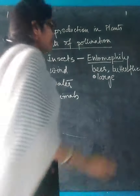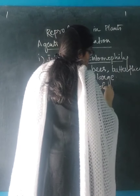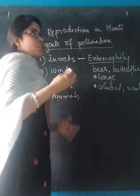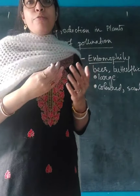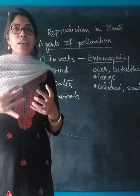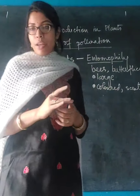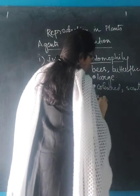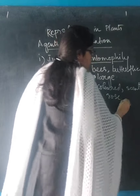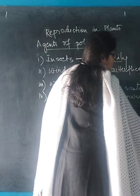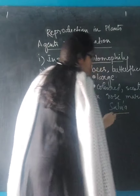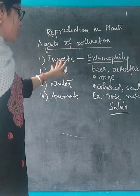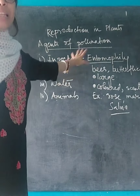Insect-pollinated flowers are also brightly colored and often scented. This bright color and sweet scent attract honeybees and butterflies to sit on the flowers, collect nectar, and transport the pollen grains. Examples include rose, marigold, and salvia — salvia being the scientific name which should be underlined. These are examples where pollination takes place with the help of insects, known as entomophily.